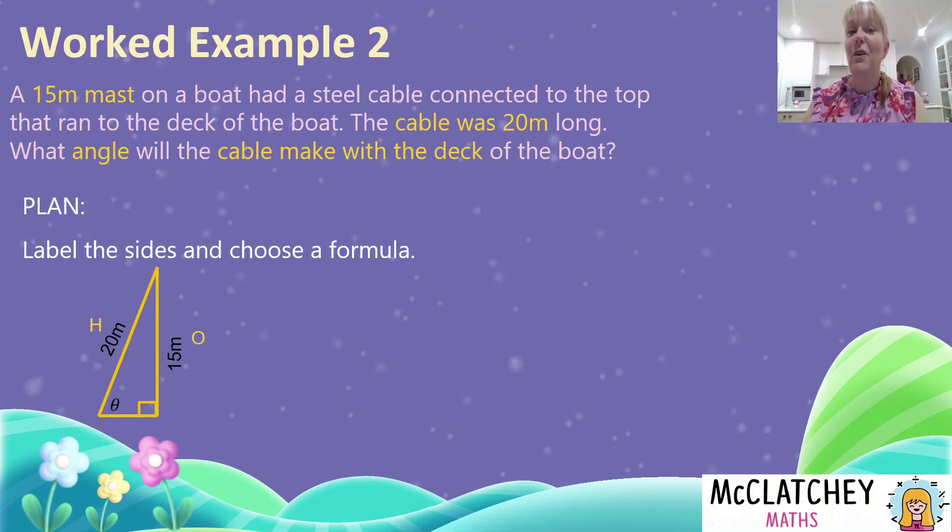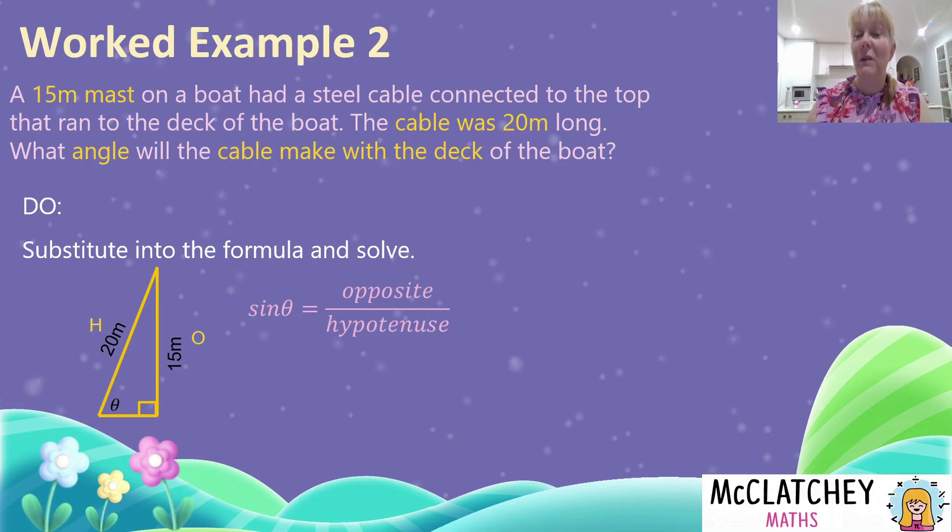From SOHCAHTOA, SOH means I'm going to use the sine formula: opposite over hypotenuse. So now it's time to substitute into that formula and solve it. So I've got 15 over 20.